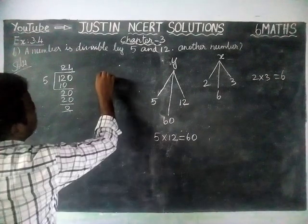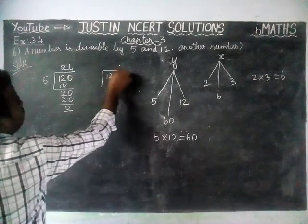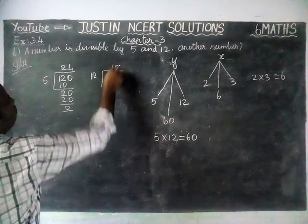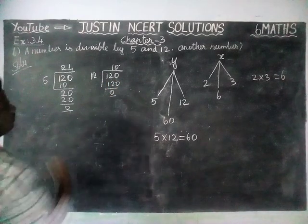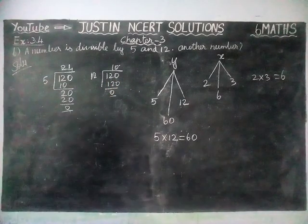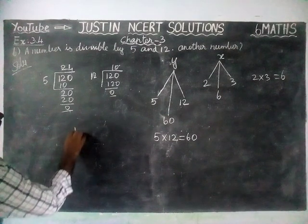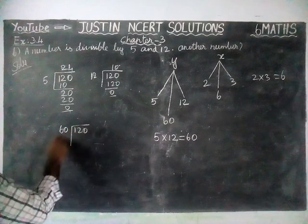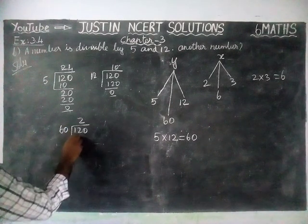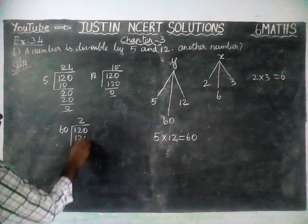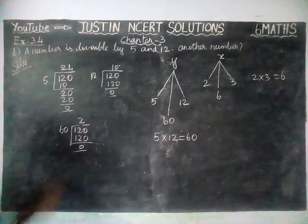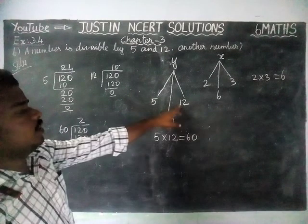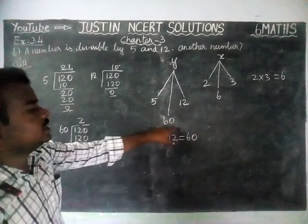Next, we are going to divide the same number by 12. 120 divided by 12: 10 times 12 is 120, remainder 0. Next, we check by 60. 120 divided by 60: 2 times 60 is 120, remainder 0.